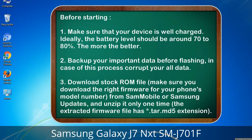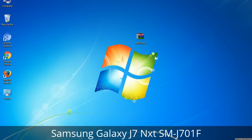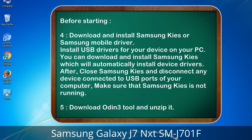Download from Sammobile or Samsung Updates and unzip it only one time. The extracted firmware file has a *.tar.md5 extension. 4. Download and install Samsung KIES or Samsung mobile driver. Install USB drivers for your device on your PC. You can download Samsung KIES which will automatically install device drivers. After, close Samsung KIES and disconnect any device connected to USB ports, making sure Samsung KIES is not running. 5. Download the Odin 3 tool and unzip it.